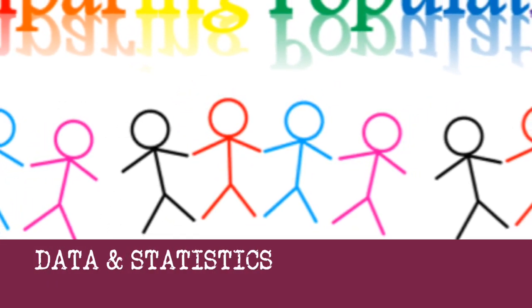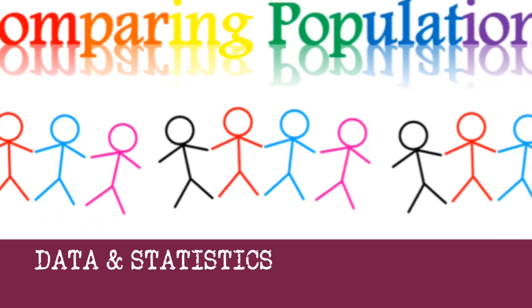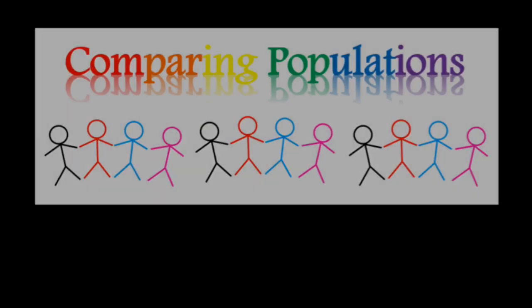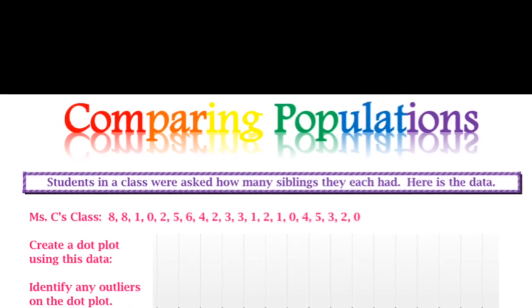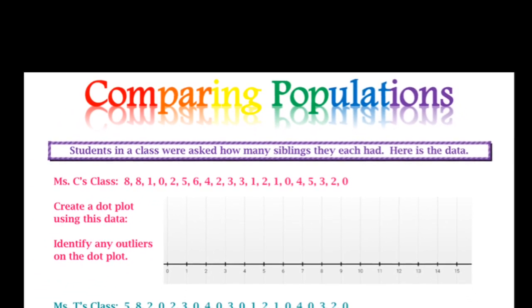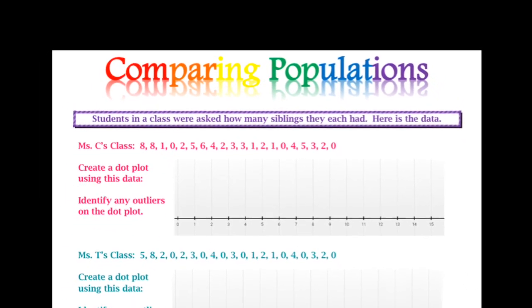Let's continue our unit on data and statistics by comparing populations. Students were asked how many siblings they each had, and here is the data from three classrooms.